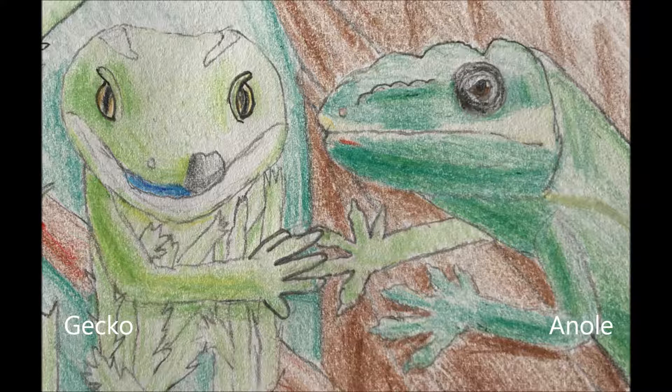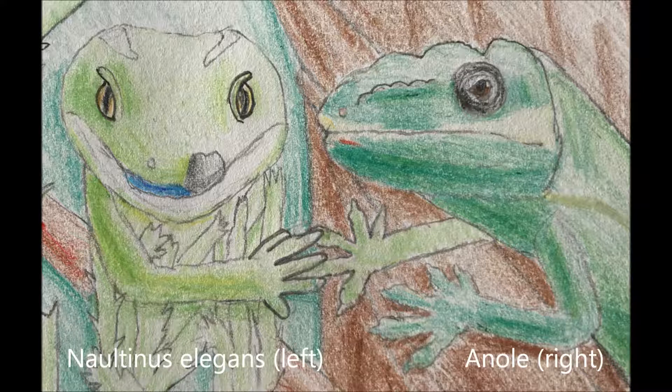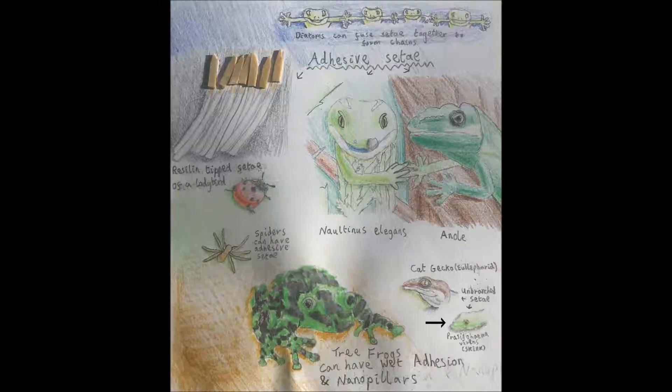Setae can vary between different geckos, and the gecko species Nortinus elegans has dense, short and thin setae that aren't greatly branched. Nortinus elegans therefore has setae more similar to anoles in some aspects than other geckos do, though anoles can still have a greater setae density than Nortinus elegans. The skink species Presenohemovirense can have setae with a density and diameter more similar to some geckos than anoles.